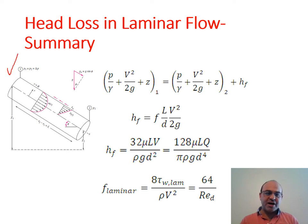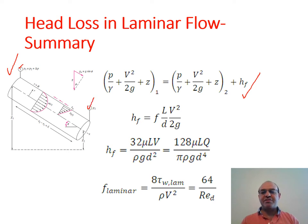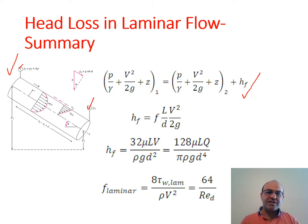We started with a section of a pipe, tilted it to also generate an elevation, though the same equations could be derived using a horizontal pipe. We wrote the energy equation between Section 1 at the beginning of the pipe and Section 2 downstream, considering a control volume containing all the fluid. P1 is a high pressure, higher than P2 — this could be the pressure at the exit of a pump.